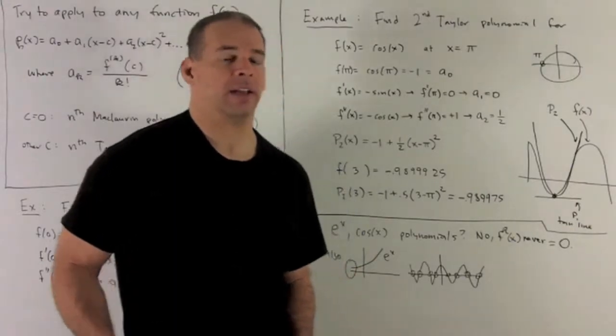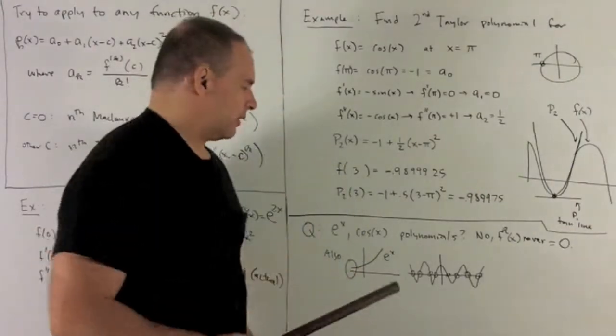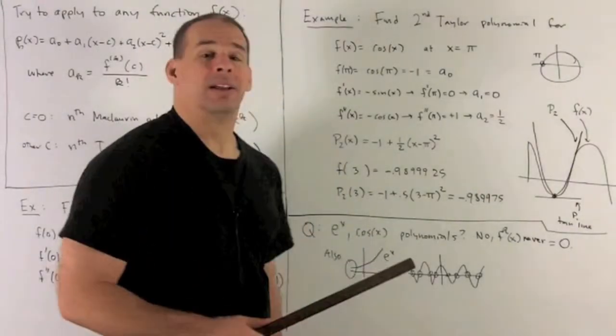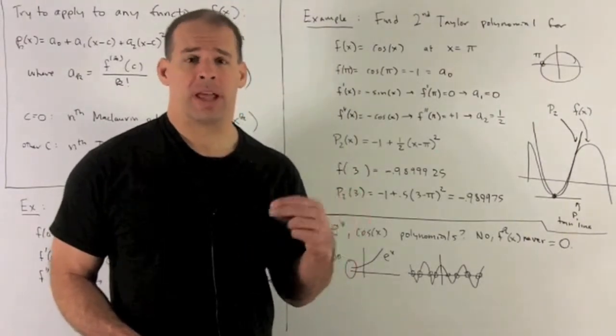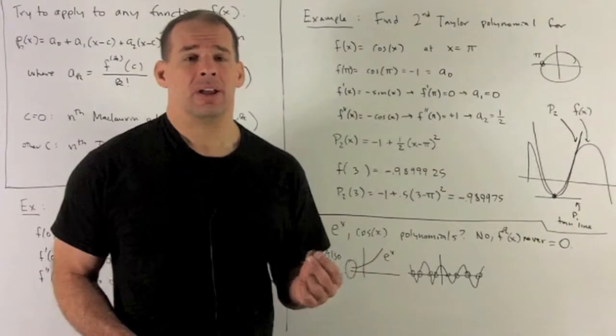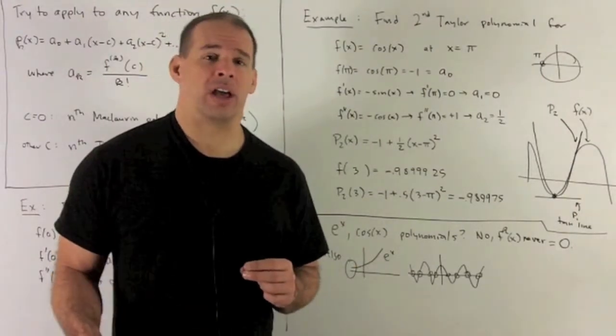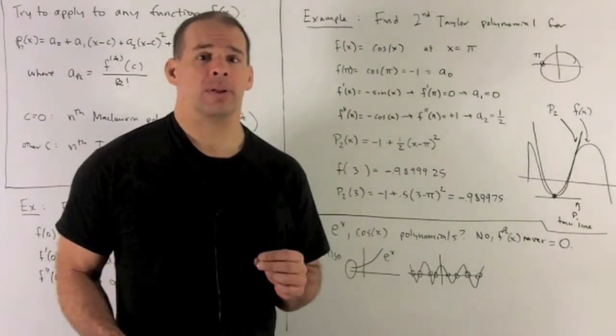So e to the x, definitely not a polynomial. How about cosine? Same idea. If we keep taking derivatives of cosine, it's going to cycle through sine x and cosine x with plus-minus signs attached to them. So that derivatives are never going to eventually flatline to 0. So not a polynomial.